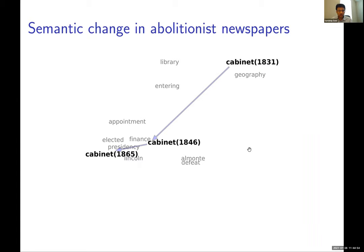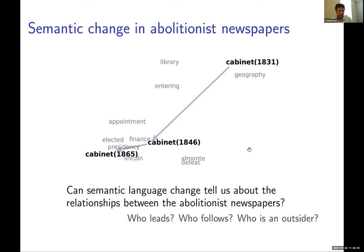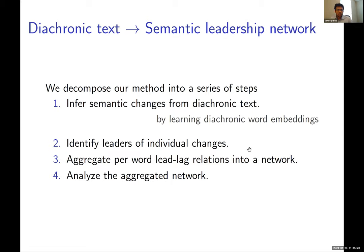The next question is whether these semantic changes can tell us about relationships between abolitionist newspapers — specifically who leads, who follows, and who is an outsider in the change process. Our overall methodology decomposes into a series of steps: identifying semantic changes, identifying which newspapers lead individual changes, aggregating these to construct a network, and then analyzing that aggregated network.